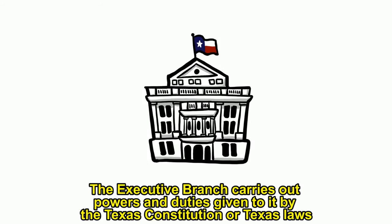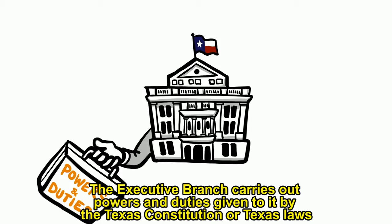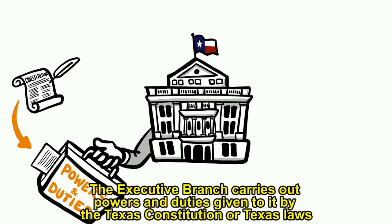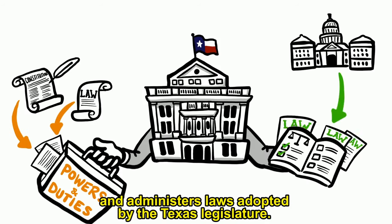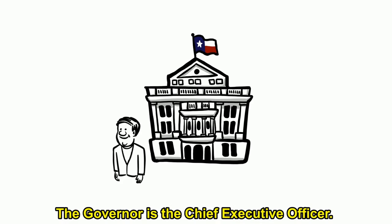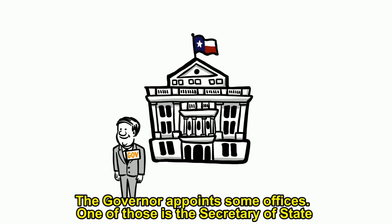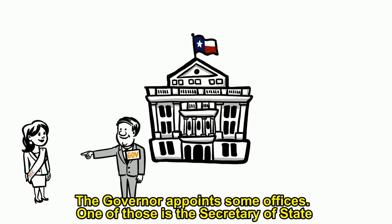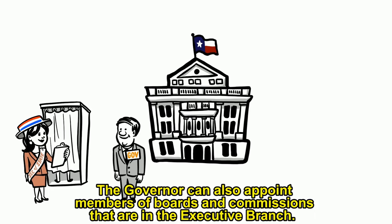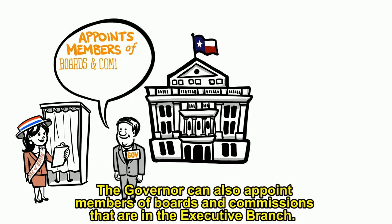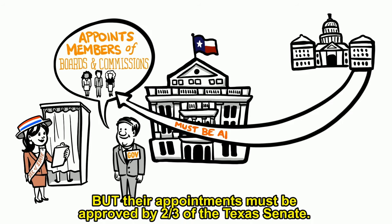The executive branch carries out powers and duties given to it by the Texas Constitution or Texas laws, and administers laws adopted by the Texas legislature. The governor is the chief executive officer. The governor appoints some offices, one of those being the secretary of state, who serves as the chief election officer for Texas. The governor can also appoint members of boards and commissions in the executive branch, but their appointments must be approved by two-thirds of the Texas Senate.